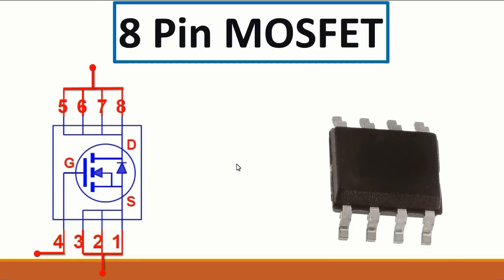Next we have the 8-pin MOSFET. This is a MOSFET with eight, three terminals. You will always find three terminals for source. The fourth one is the gate, and the other four are for drain — so four terminals for drain, three for source, and one for gate.